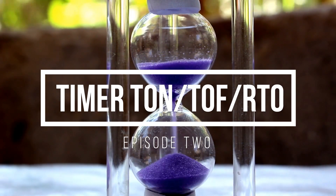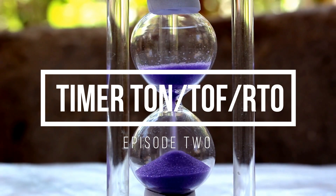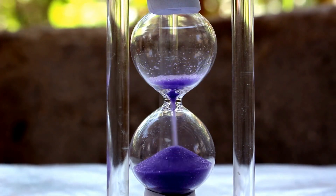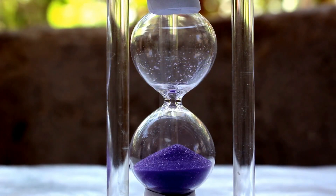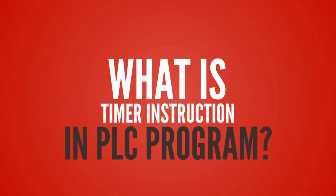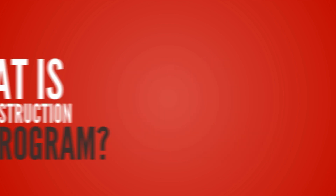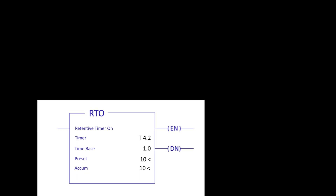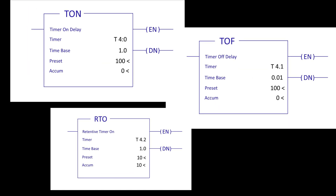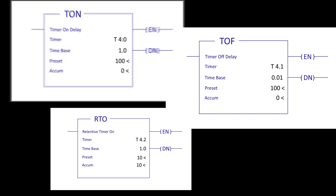In this video, we will feature timer instructions. What is a timer instruction in a PLC program? A timer is a PLC instruction that waits a set amount of time before doing something.